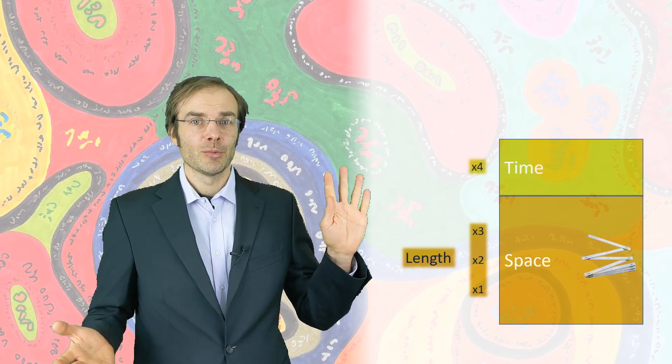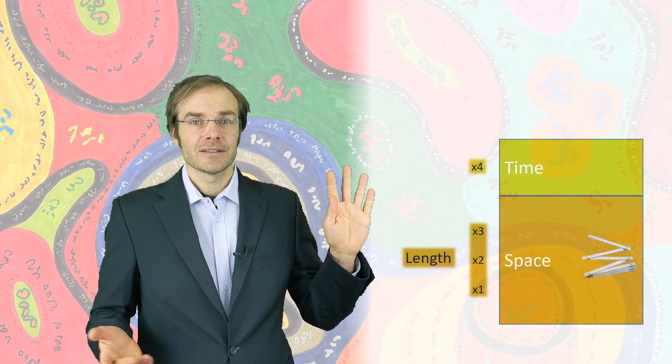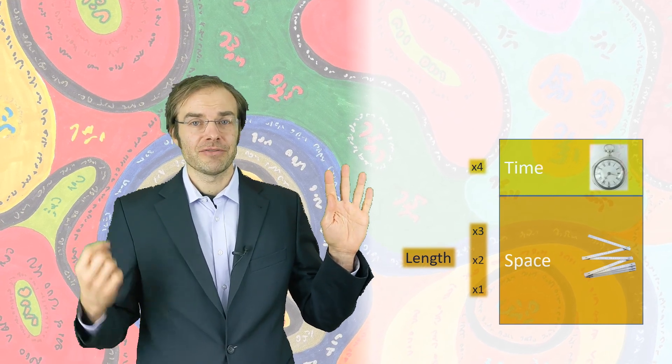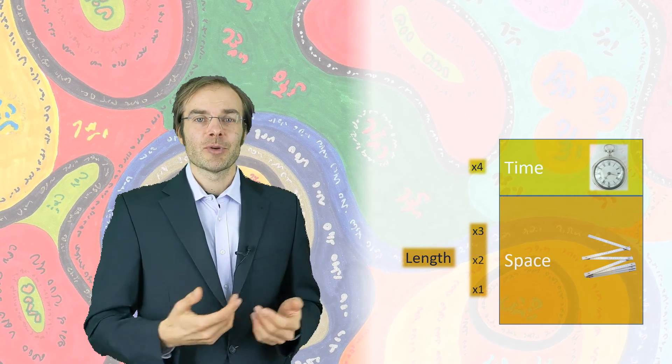Dimension four is also well known to everyone. It's time, of course. Einstein said time is what the clock measures. He didn't know how to define it otherwise. But everyone has a grasp on the concept of duration.